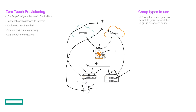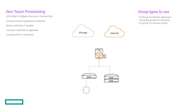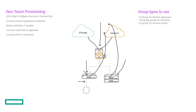That's how you would ZTP a branch site. First, you're going to connect up this gateway to the internet — it's going to grab its configuration from Aruba Central, and that's going to have the connection for your MPLS. Then you're going to plug in your switch — either a single switch, or you'd stack a pair of switches and plug them in together. Then you're going to plug in your APs. Each device is going to grab a DHCP address, reach out to Central, and grab its configuration. Pretty simple.